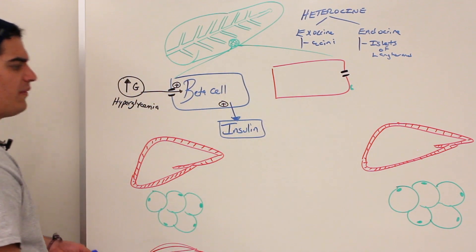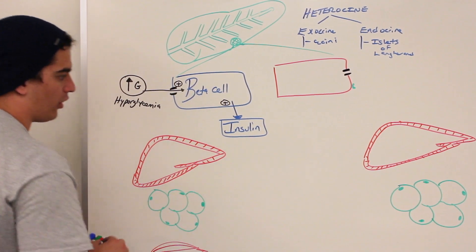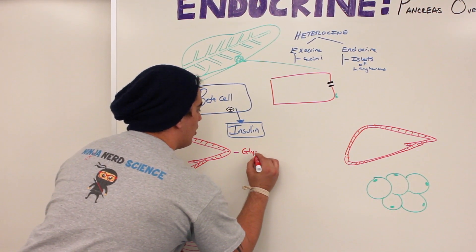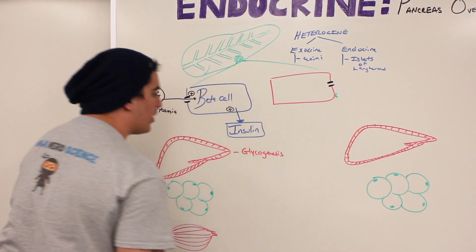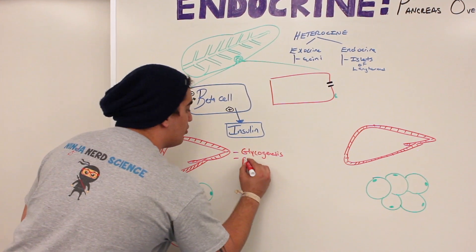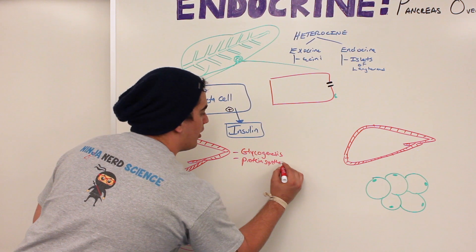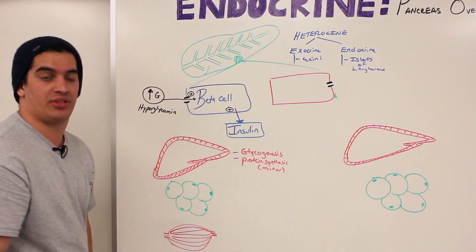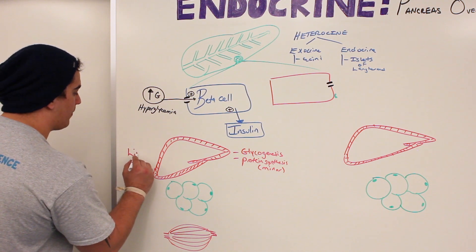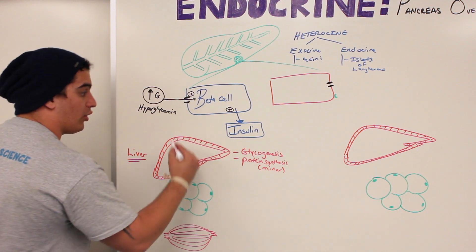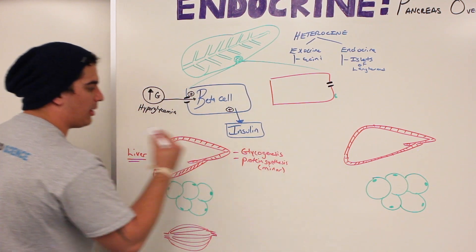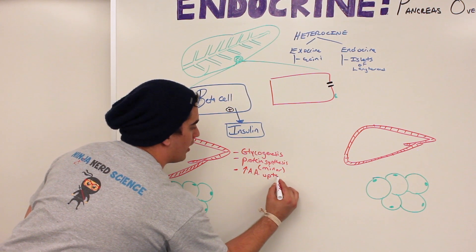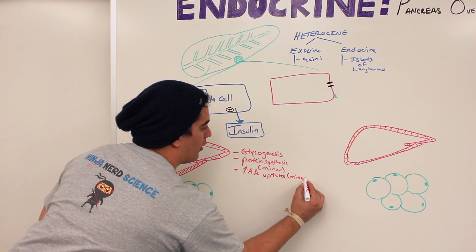Insulin works on several target organs. In the liver, it promotes glycogenesis — converting glucose into glycogen. It also has a minor effect on protein synthesis and increases amino acid uptake, also to a minor effect.